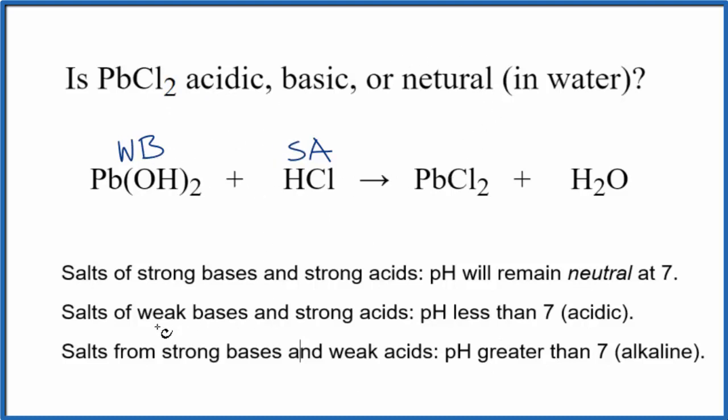So we have a weak base and a strong acid. Here's a weak base and a strong acid. And it says the pH is going to be less than 7. The solution is going to be acidic. So in answer to our question, PbCl2 in water forms an acidic solution.